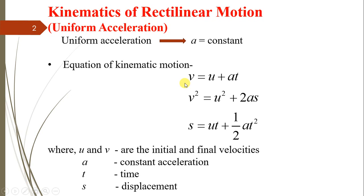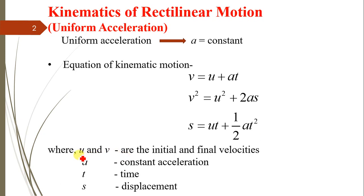There are three different kinematic equations which we have studied at college or school level: v = u + at, v² = u² + 2as, and s = ut + ½at², where u and v are the initial and final velocities of the particle or body.